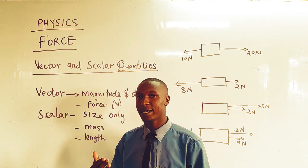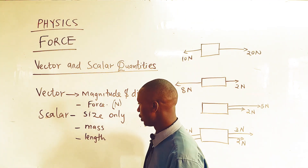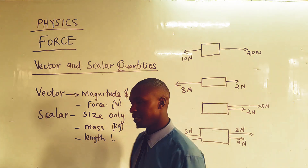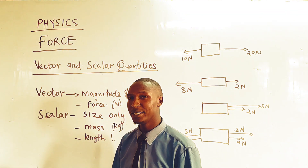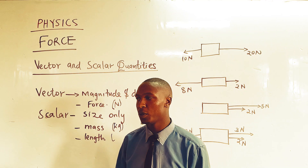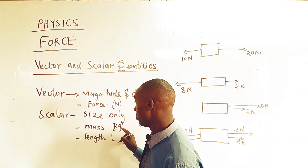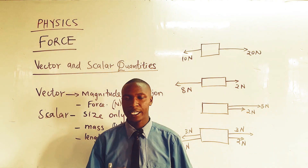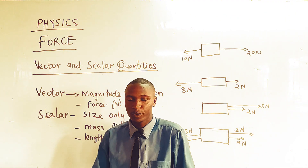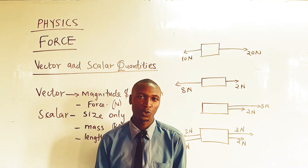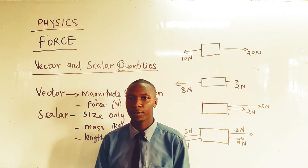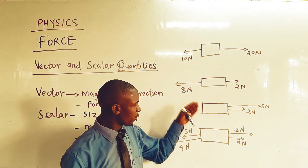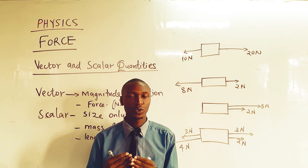Mass is in kilograms and we don't have direction — you cannot say this is 20 kg towards a given direction, so mass becomes a scalar quantity. Length is in meters, and if you give a quantity like two meters, you cannot really specify the direction, and therefore that also becomes a scalar quantity.